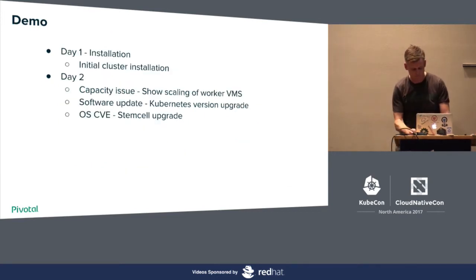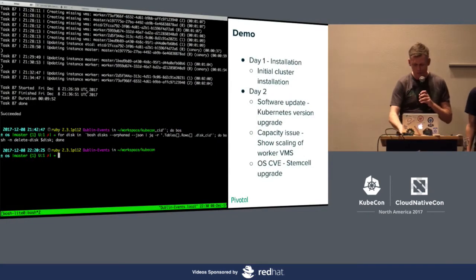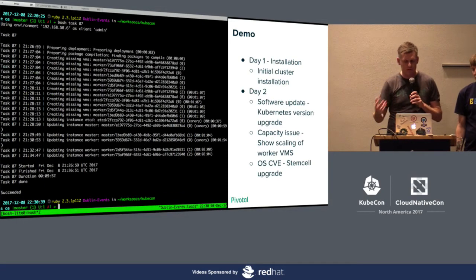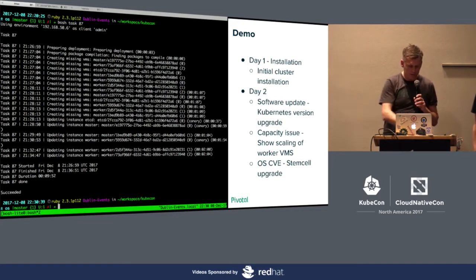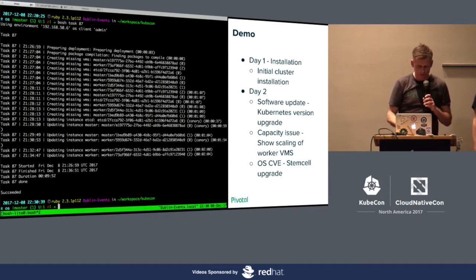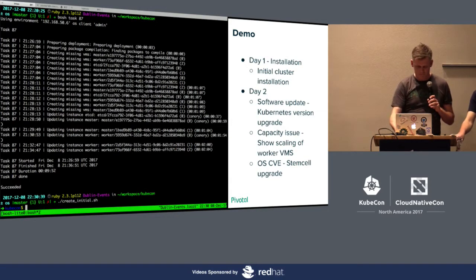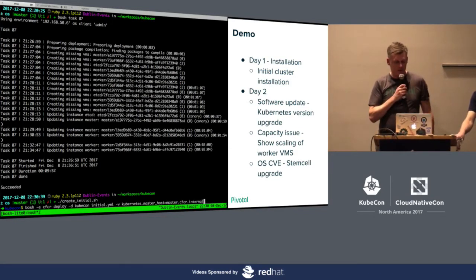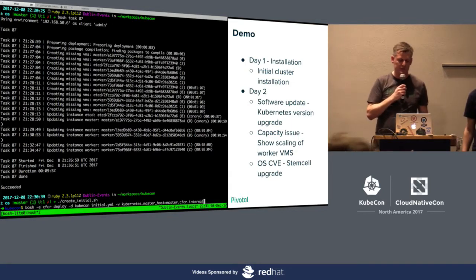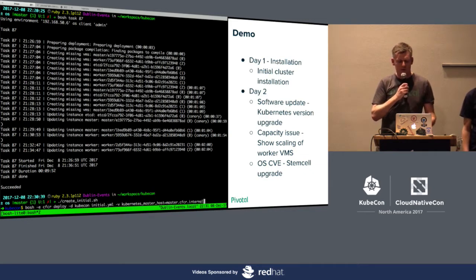We're going to jump into the demo now. What I had intended to show was an initial installation, but since installation is very easy, I've actually pre-installed a BOSH deployment — it took about nine minutes. Using the BOSH CLI, we're deploying a deployment called kubecon. We're using an initial.yaml, a deployment manifest describing the Kubernetes cluster we want to deploy. In our particular instance, this cluster is a single etcd node, two master nodes, and three worker nodes. It also takes a variable for the Kubernetes master host, which is a value put on the SSL certificate serving the API server on both master nodes.